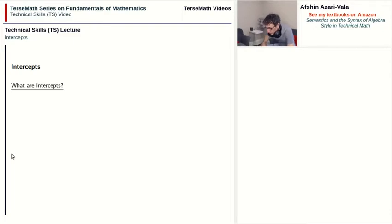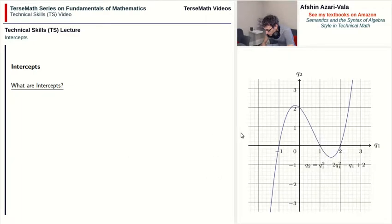Now the question of what are intercepts, so that we at least know what they are before we can use them in applications. Let's take a look at the graph on the right side. Intercepts are points where the graph meets the axis.